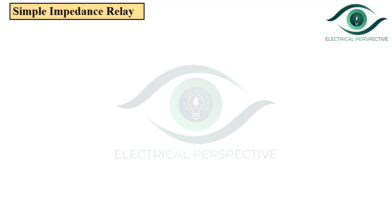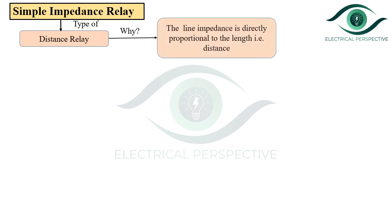Let us start with some basics. Simple impedance relay is a type of distance relay, and we know that the line impedance is directly proportional to the length, that is distance. In other words, impedance is nothing but an electrical measurement of distance along the transmission line, and thus it is also called a distance relay.